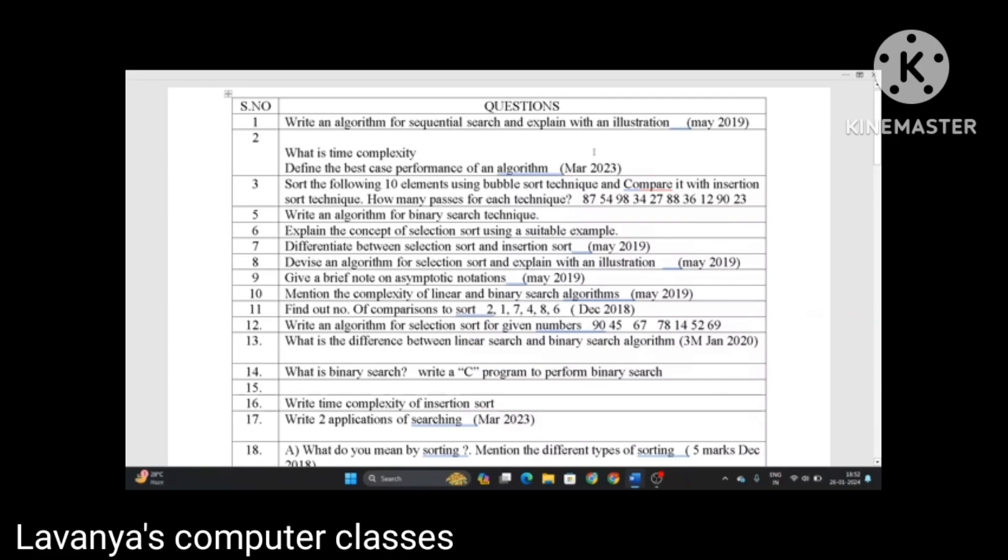If I am not mentioned the date, that is from previous question paper only. Write an algorithm for binary search technique. This is very important essay type as well as short answer also. Explain the concept of selection sort using a suitable example, also from March 2023. Differentiate between selection sort and insertion sort, May 2019. Devise an algorithm for selection sort and explain with an illustration, May 2019.